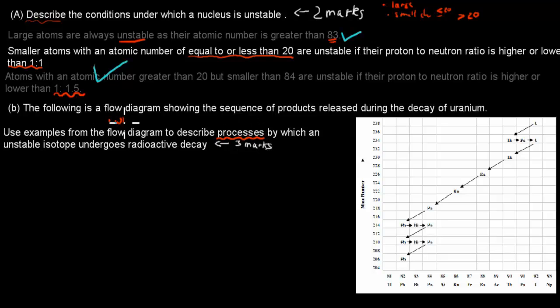First of all, we have to describe these processes. So what are they? We give a definition. And then we have to relate those processes to what occurs with this uranium here. So then relate to the example.